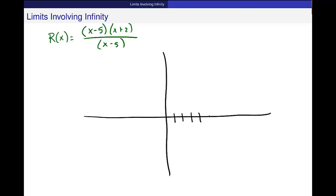So in this, the function r of x is equal to x minus 5 times x plus 2, over x minus 5. Now the graph of this will still have a discontinuity at 5.